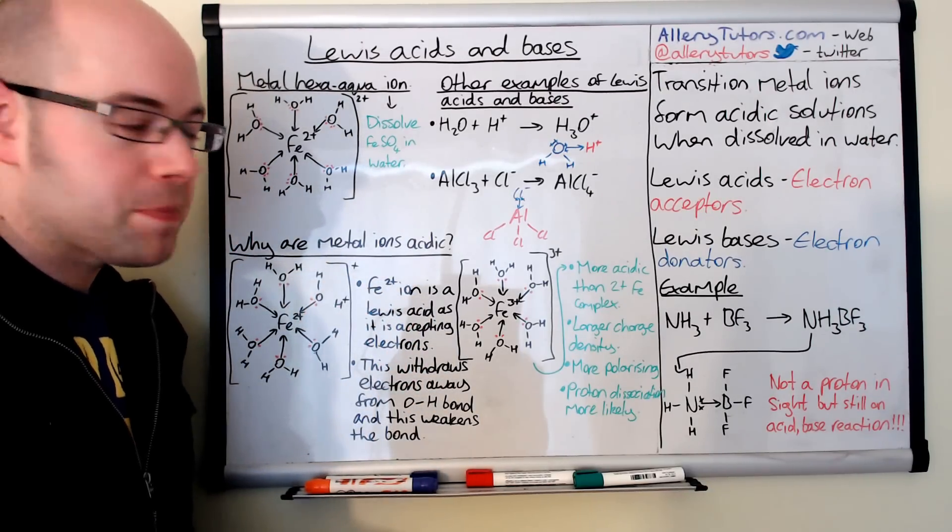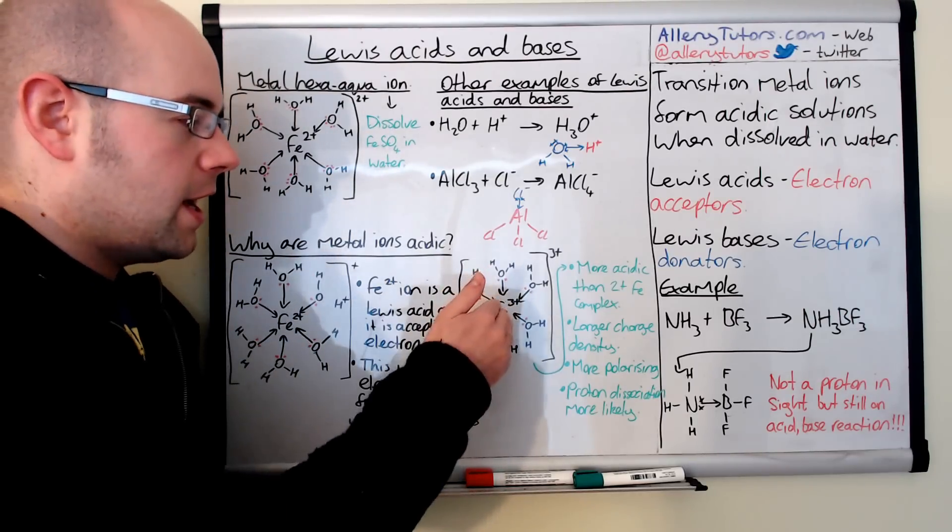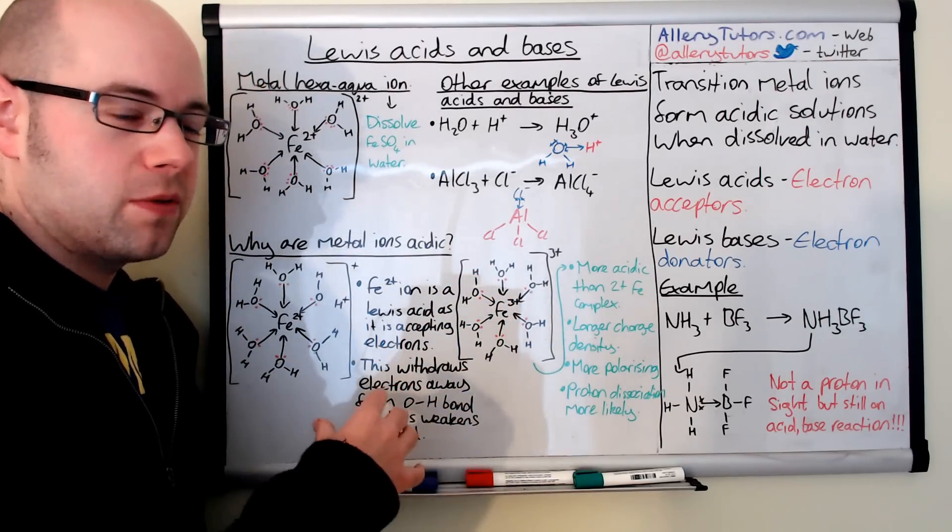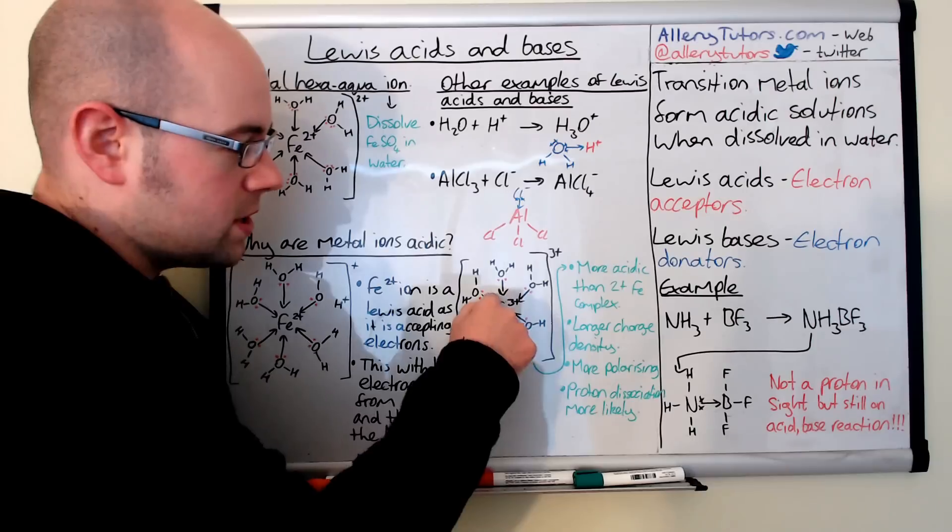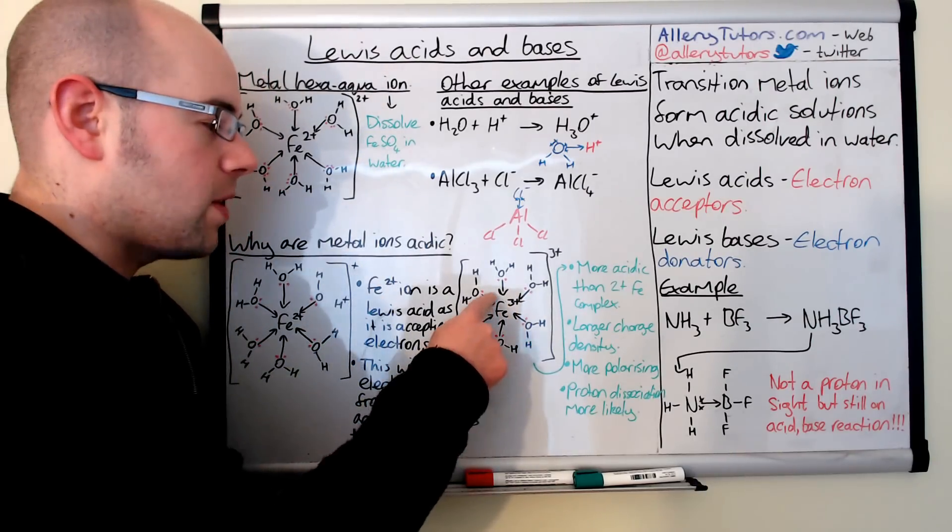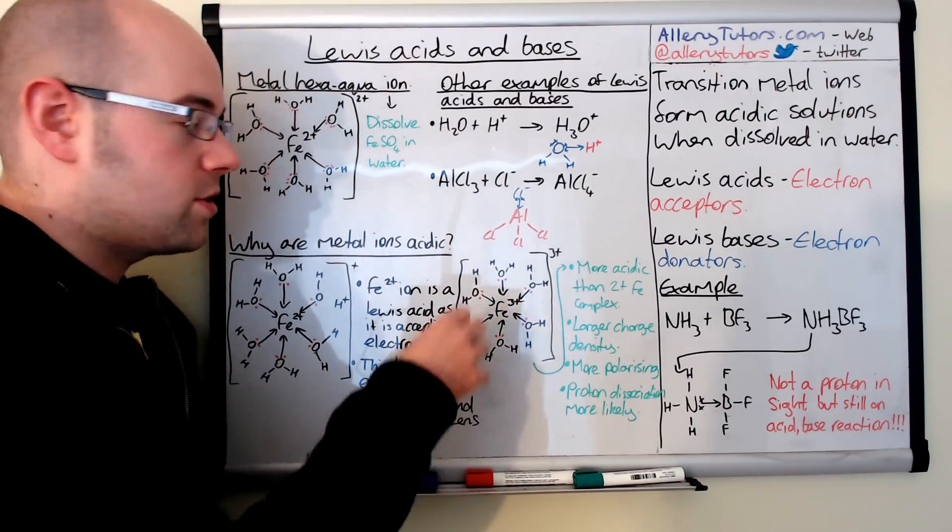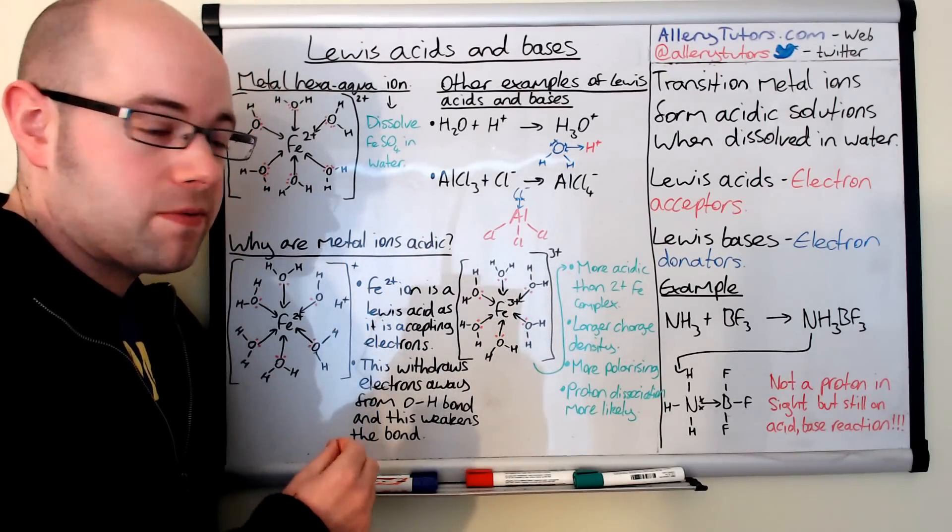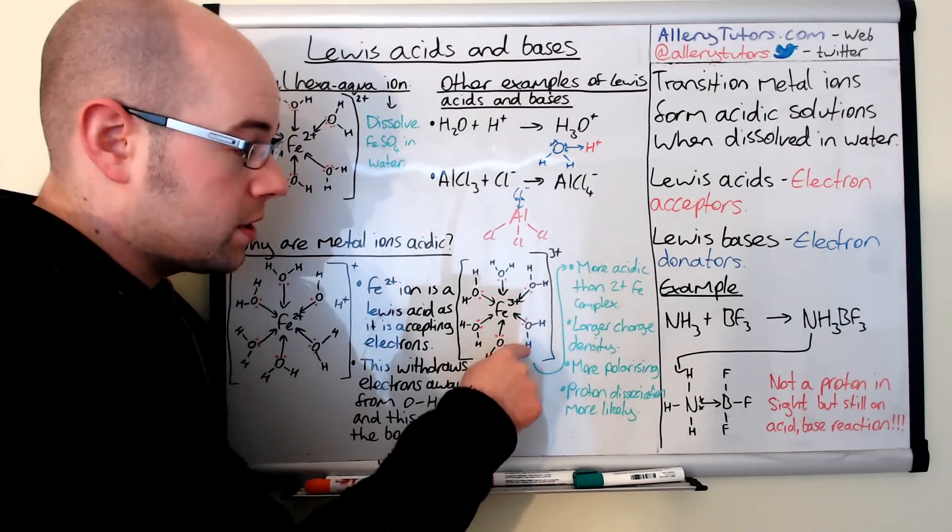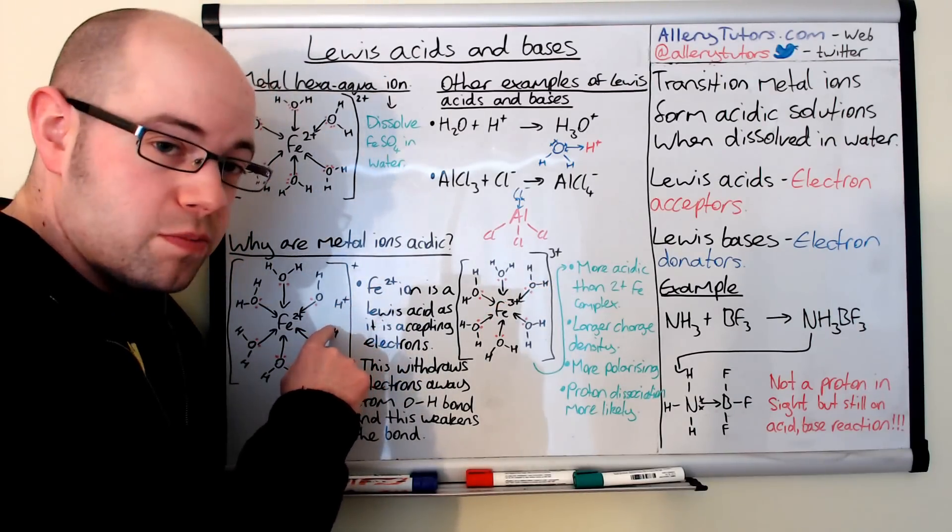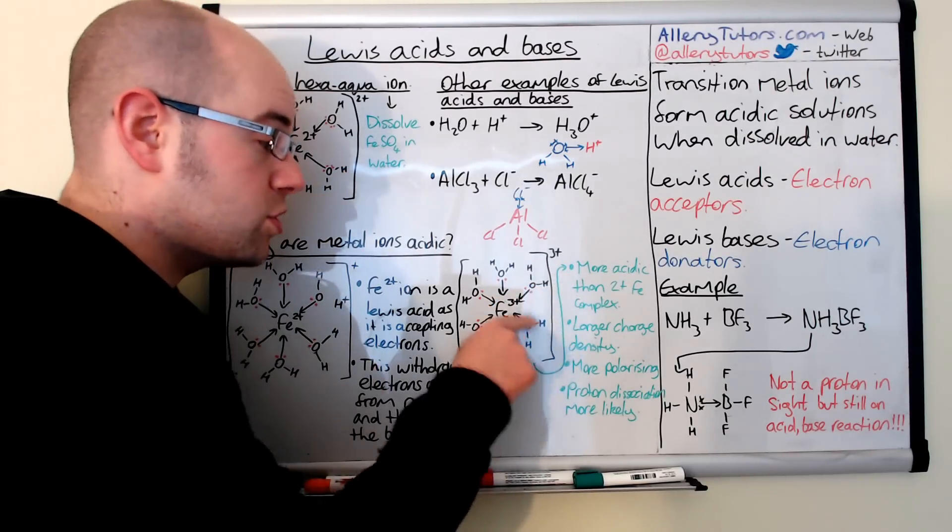Some complexes are actually more acidic than others. For example, iron 3 complexes, such as Fe2O3 dissolved in water to form iron 3 hexa aqua complex, are more acidic. The reason why is because this has got a higher charge density. We've got Fe3+ and Fe2+—same atom, same size, but more charged. Therefore it's going to have a much more polarizing effect and pull the electrons a lot more towards itself, weakening this bond even more.